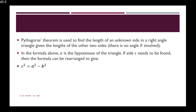Pythagoras's theorem is used to find the length of an unknown side in a right-angled triangle, given the length of the other two sides. There are no angle theta involved. In the formula, A is the hypotenuse of the triangle, and if we need to find the value of one of the sides that is not the hypotenuse, let's say the side C, then we can rearrange the formula to give us C squared is equal to A squared minus B squared.